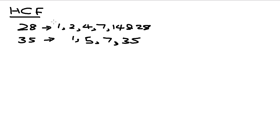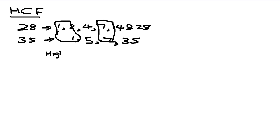So as you can see here, the only common ones are 1 and 7. So the highest common factor is actually 7, because the rest of the numbers are not the same.